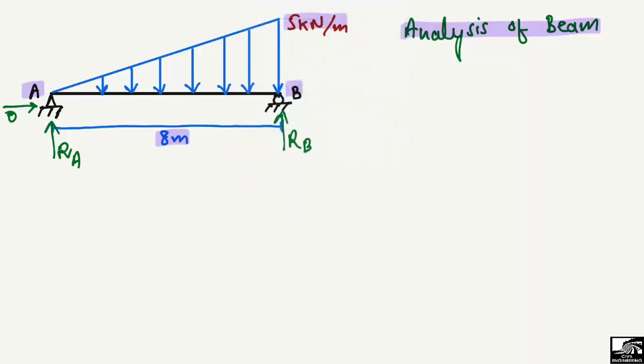To start the analysis of this beam, first we have to find the support reactions. For this, we need to find the area of the triangular load, because once we find the area it becomes an equivalent concentrated load acting at the centroid. When there is a uniformly varying, trapezoidal, or triangular load, the first step is to find the area of that shape.